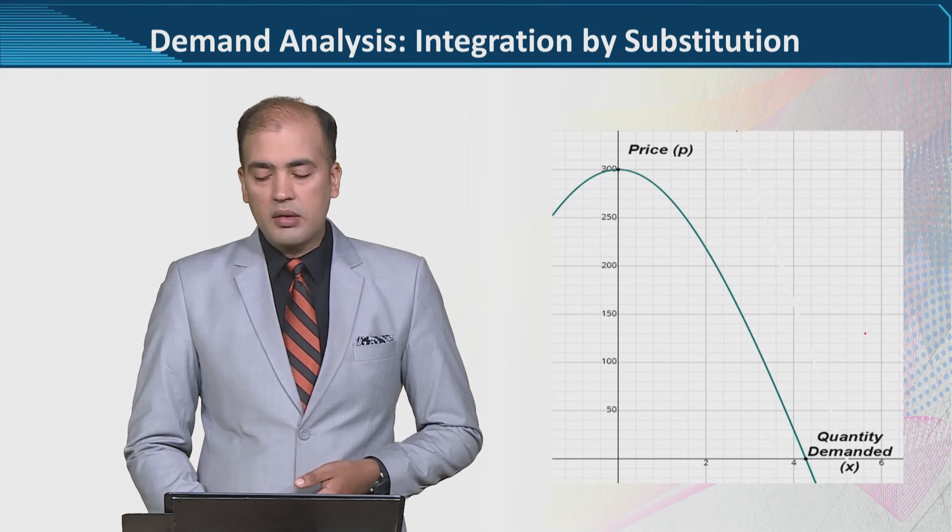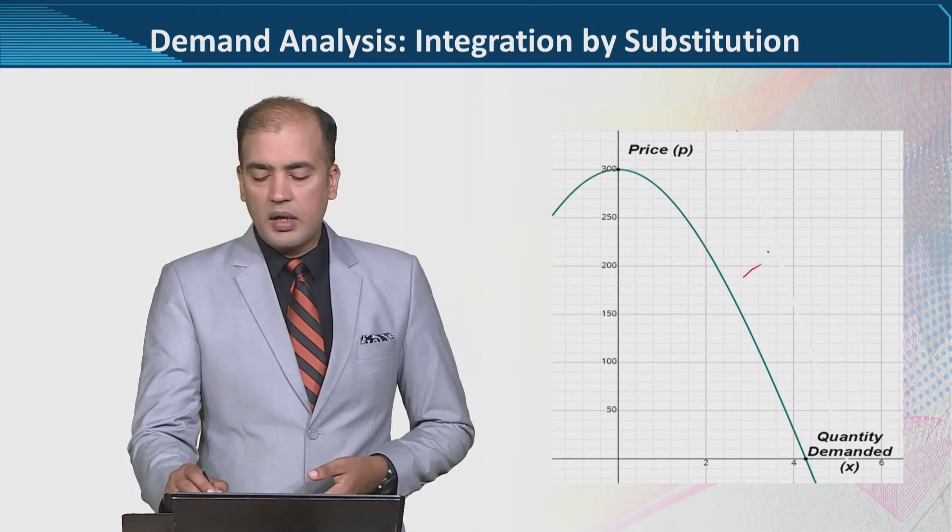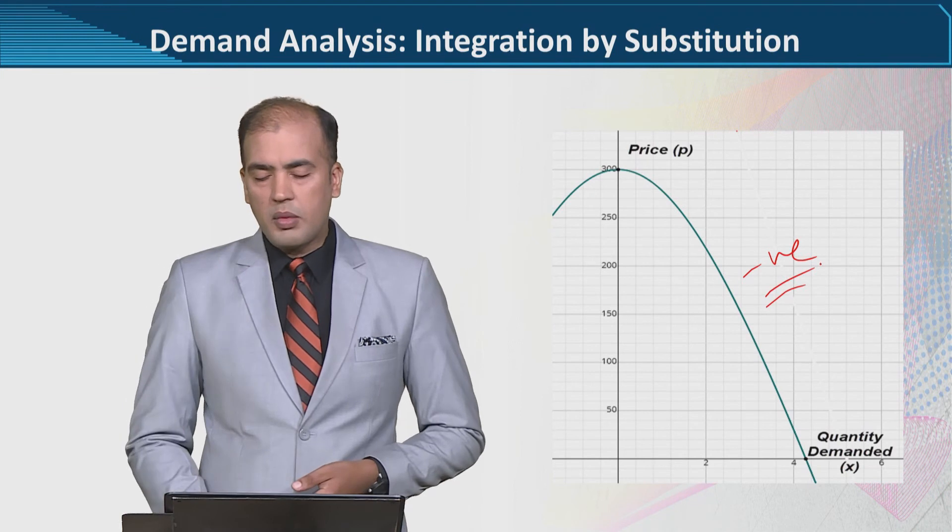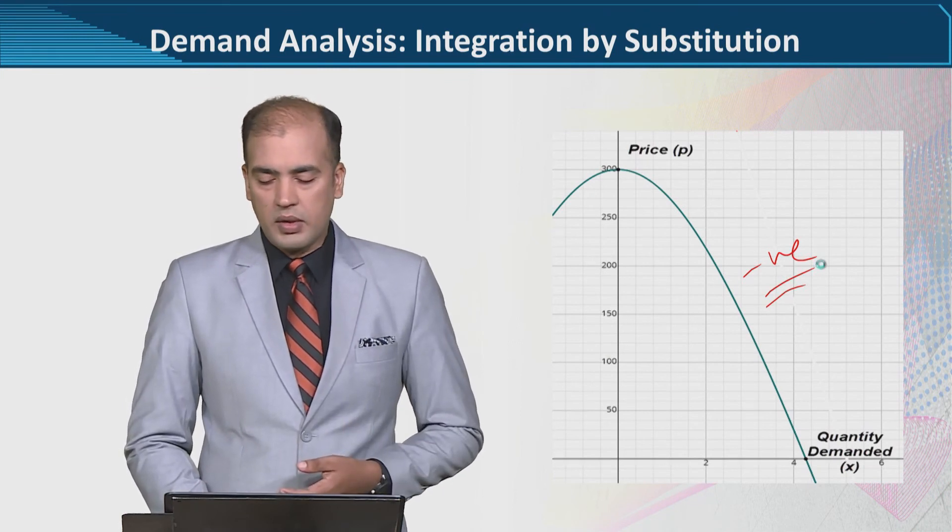Now if we make a graph of this, it will look like this - a negative inverse relationship exists, and the demand function exists in this way, which is also depicted here.